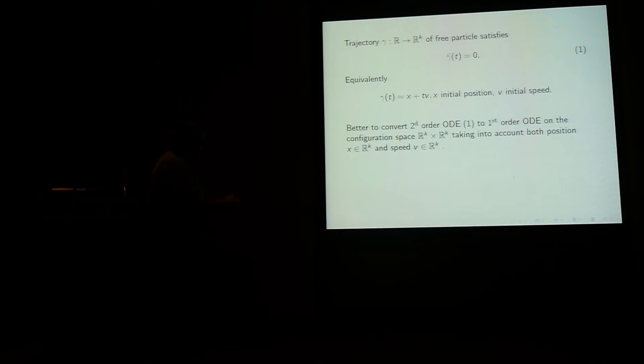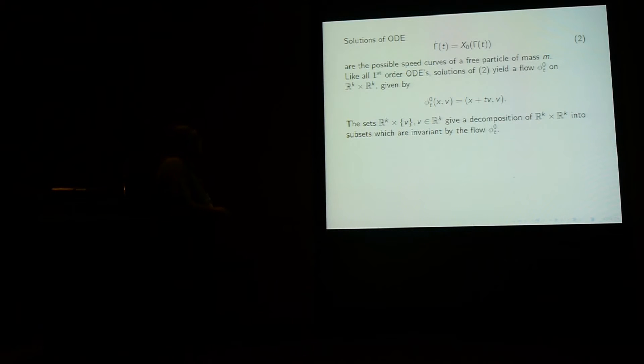It's better, once you have a second-order equation like this one, to convert it to a first-order ODE. But for this, you have to take into account both position and speed. And the ODE becomes big gamma dot equals X₀ of gamma, where big gamma takes into account both position and speed. It's called the speed curve of gamma. And the vector field is just the vector field X₀ of xv is v0.